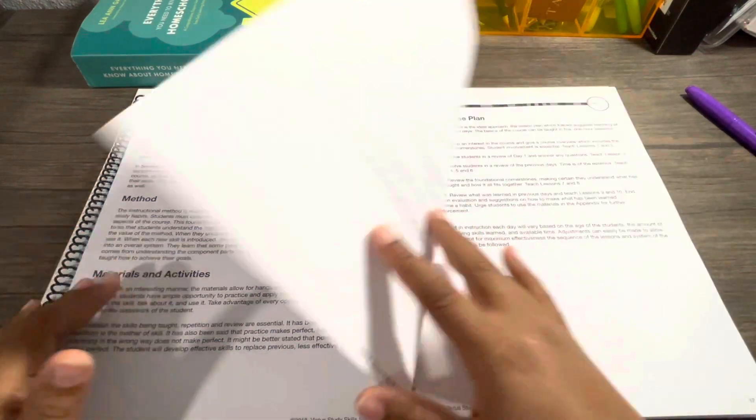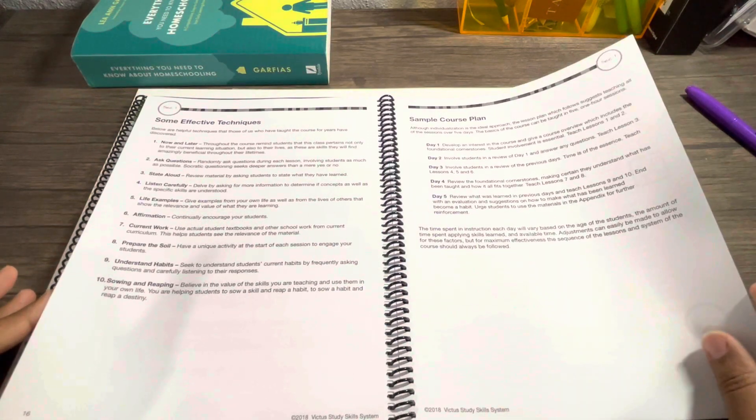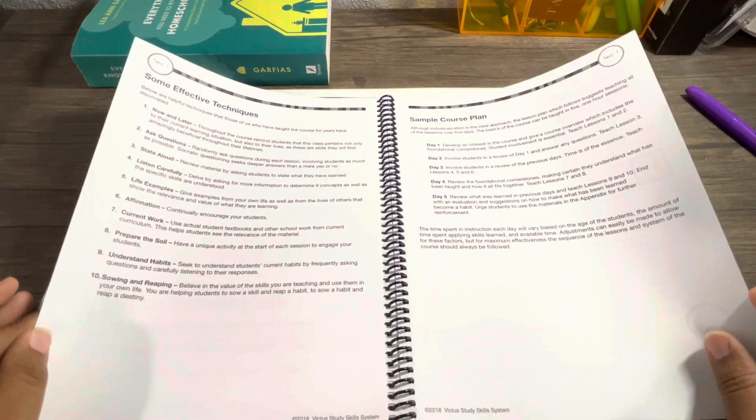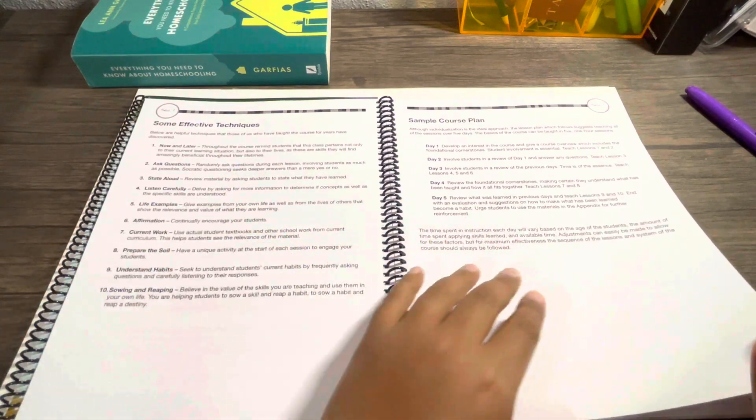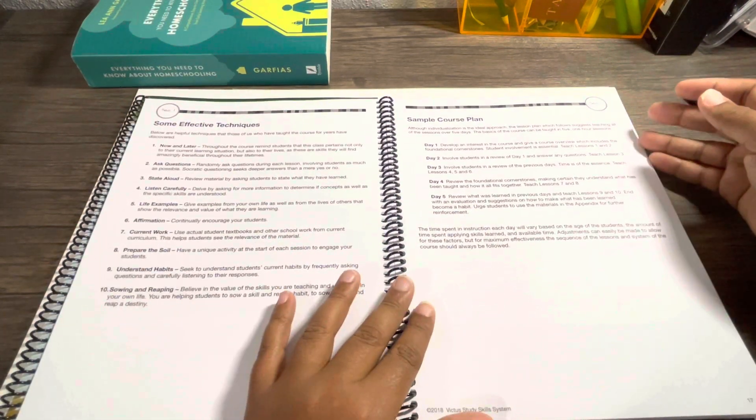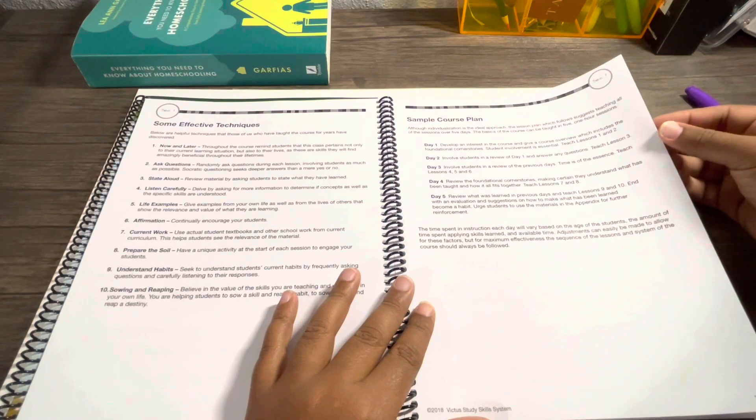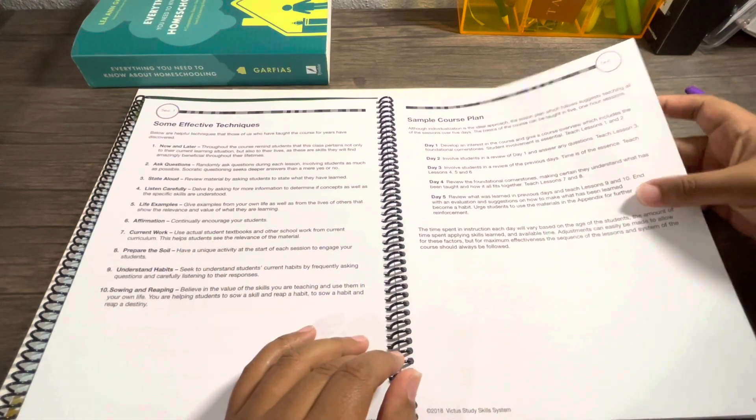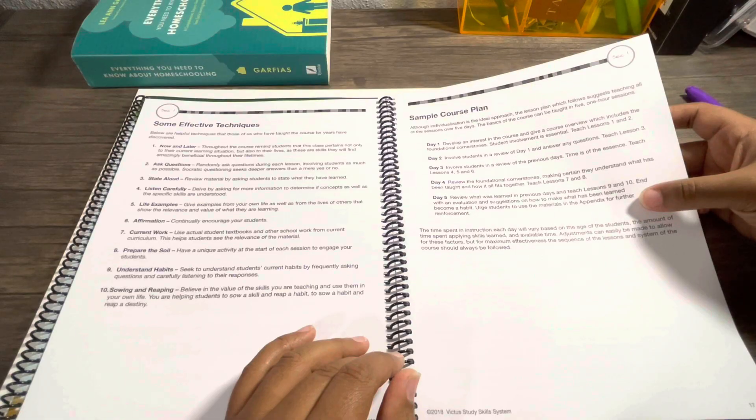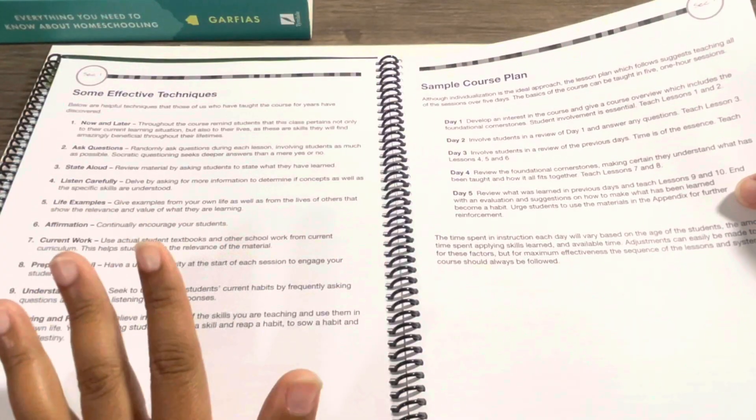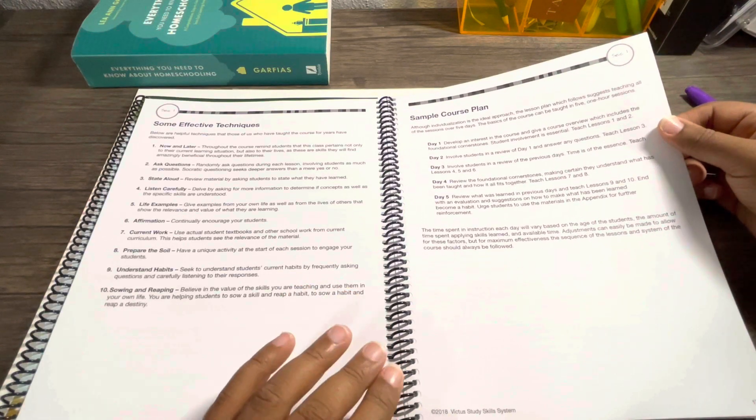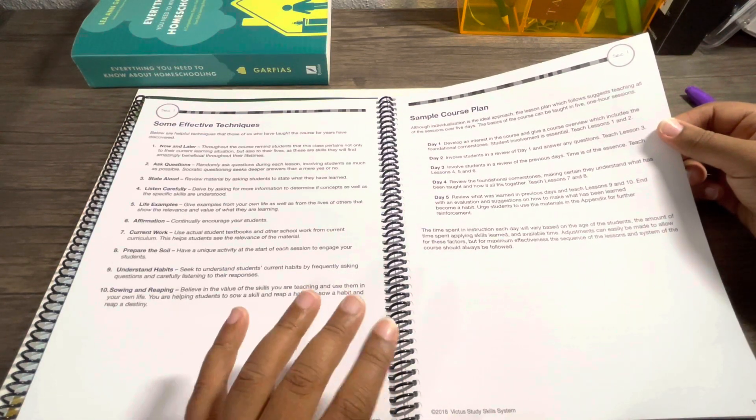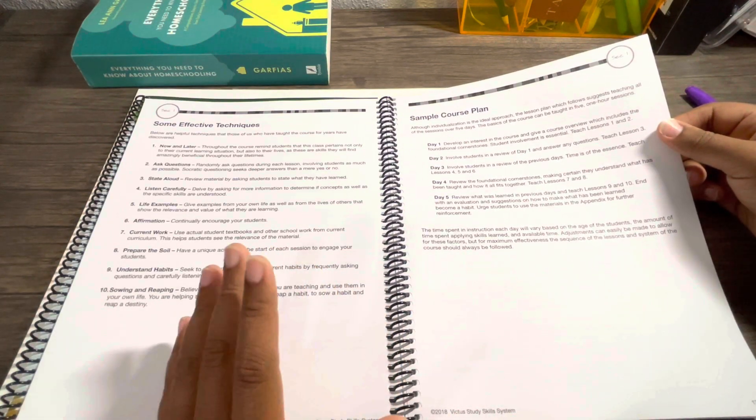There's an effective techniques sample course plan showing what you could do in five days. There's actually ten lessons; lesson ten is a review. You can do this whole course in one week, which is why I chose to do this for our first week of school.